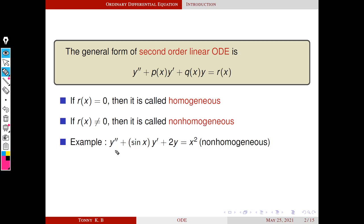For example, consider y double dash plus sin(x) into y dash plus 2y equals x squared. It is clear that here r(x) is x squared, which is non-zero, so this is an example of a non-homogeneous differential equation. Here p(x) is sin(x) and what about q(x)? q(x) is 2.